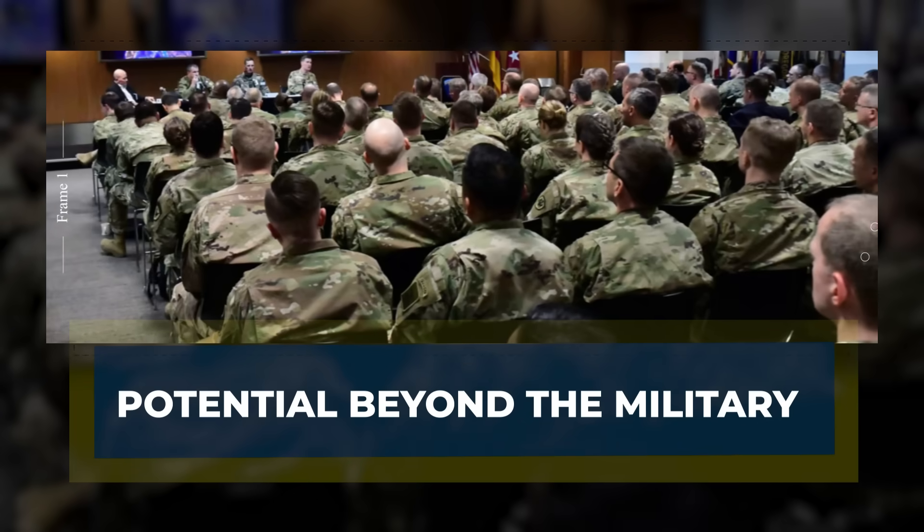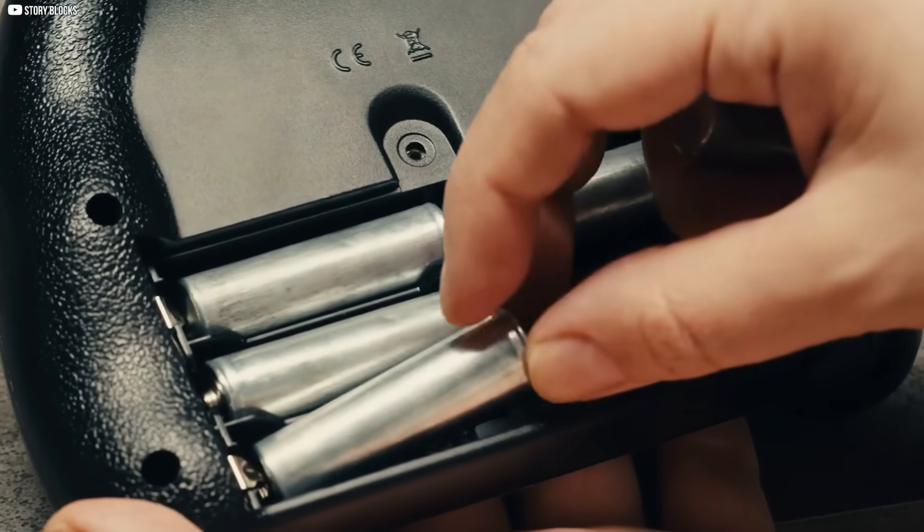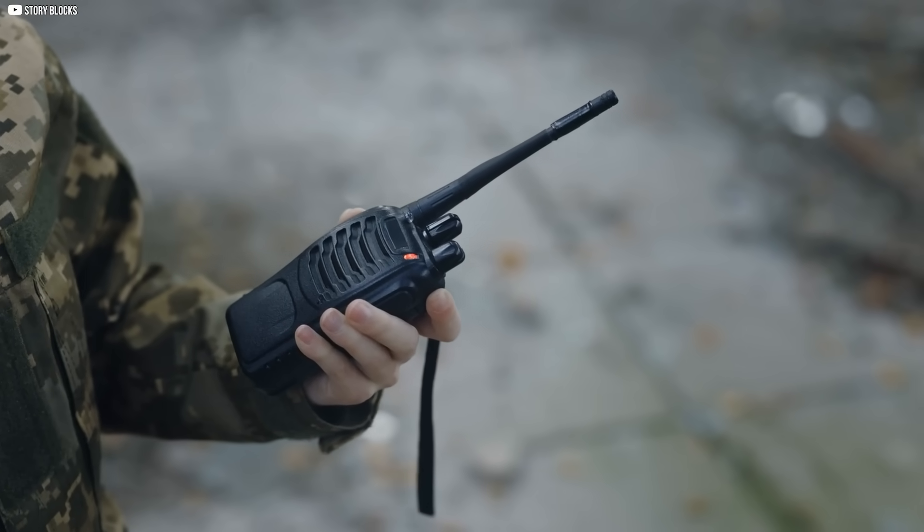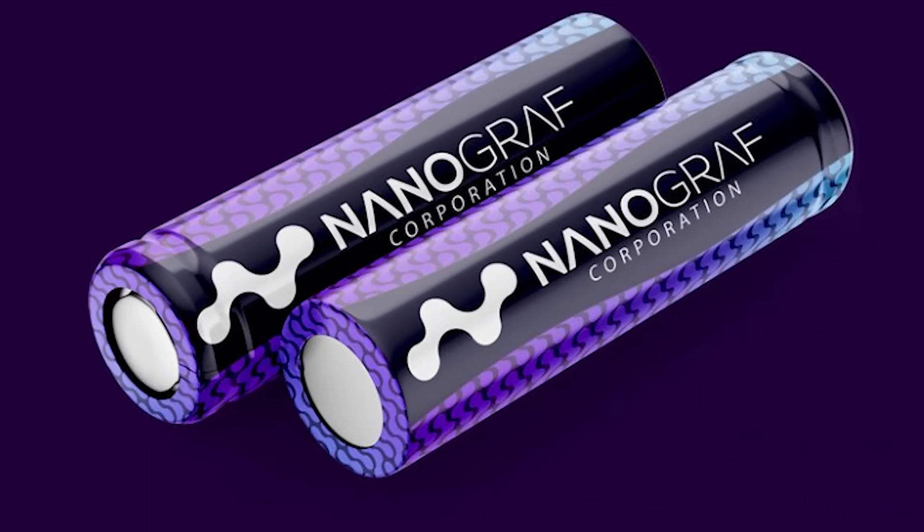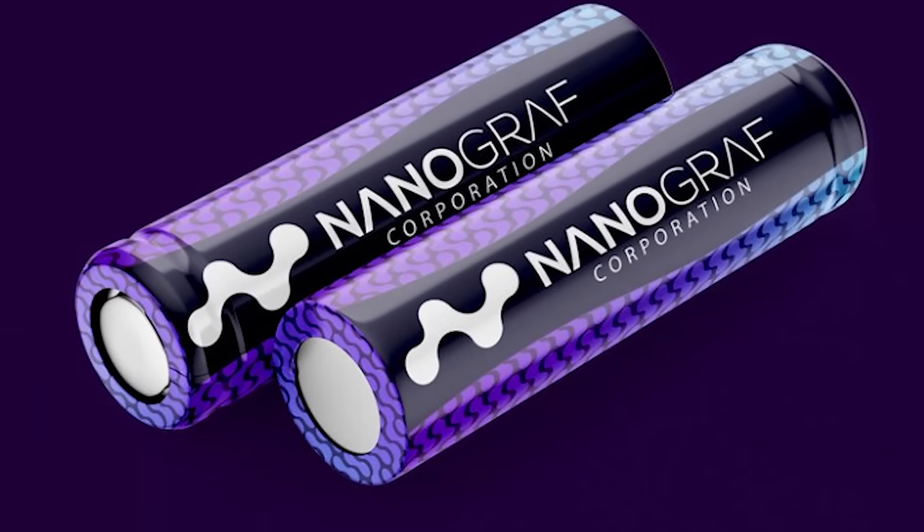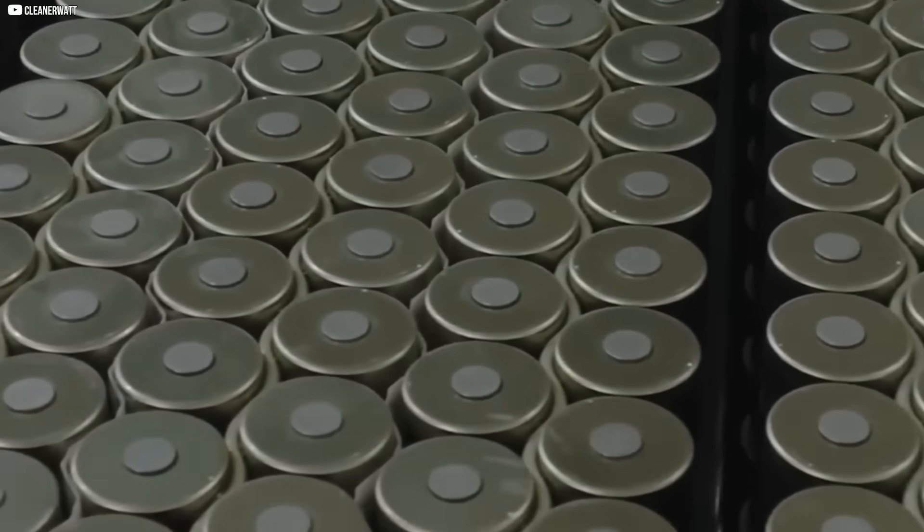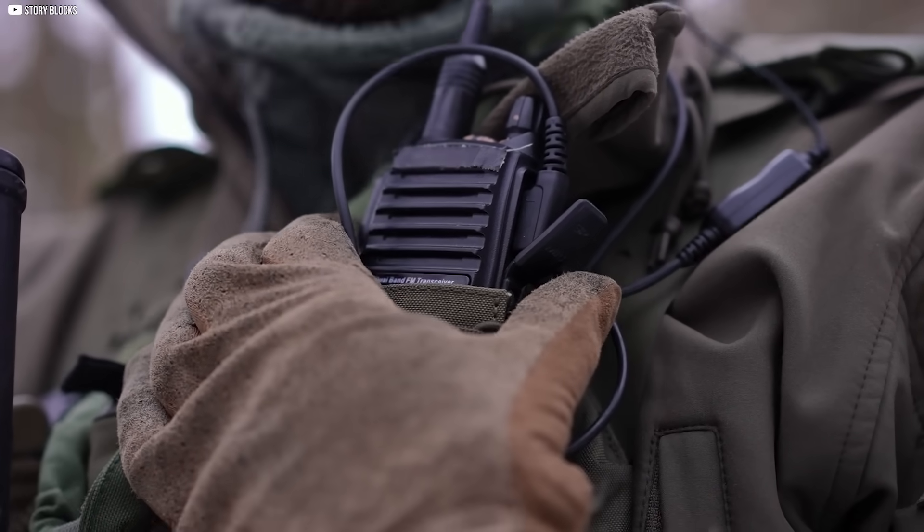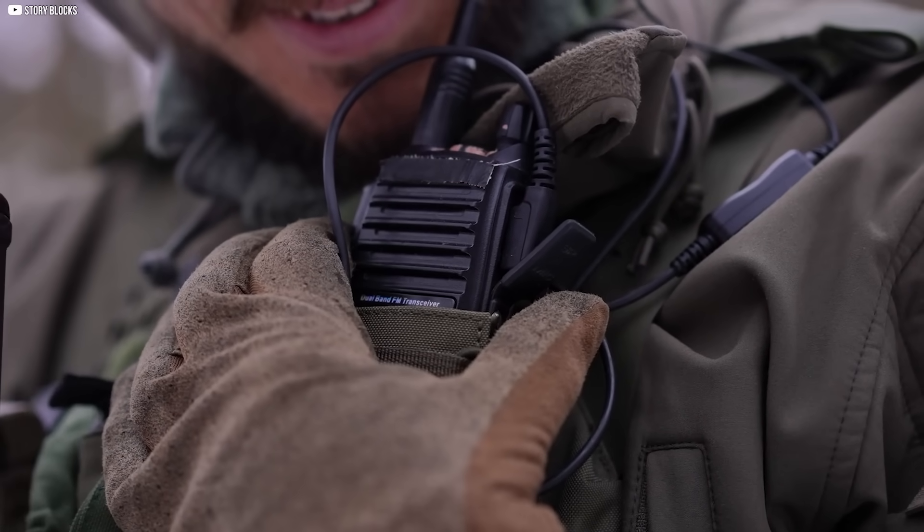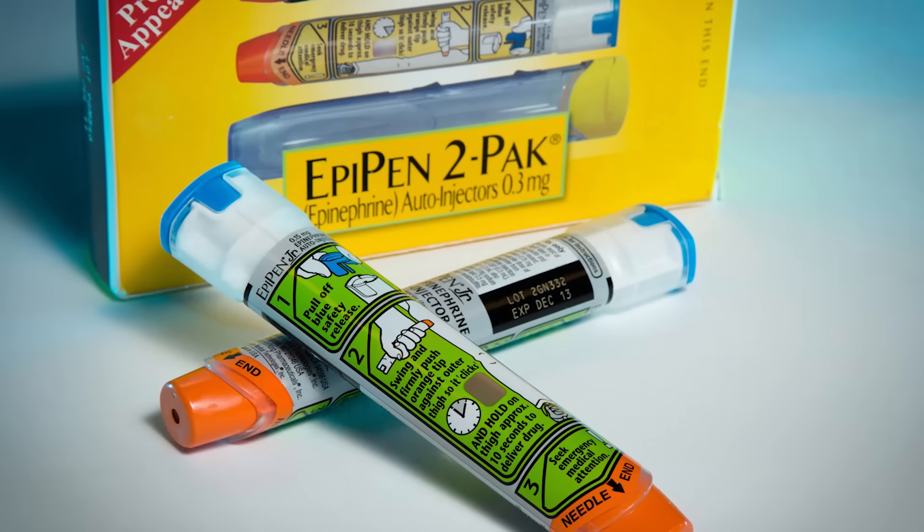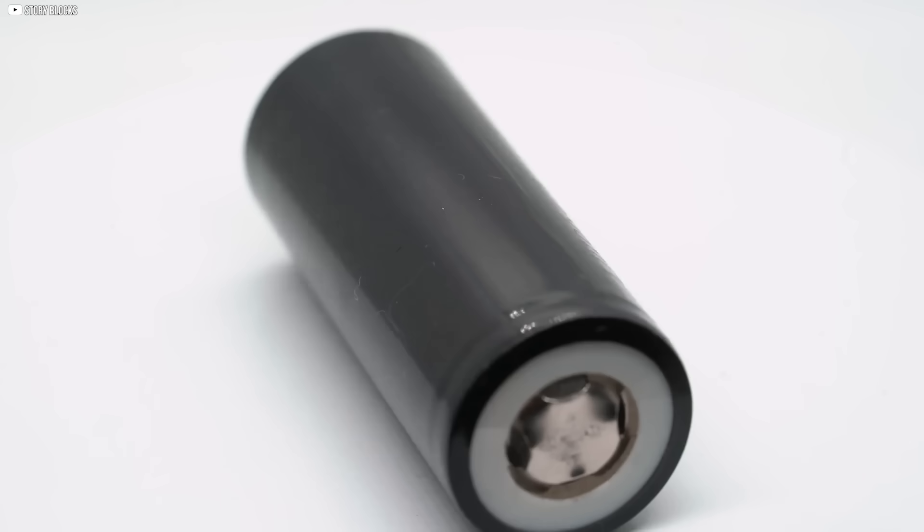Right now, these batteries are going into radios, tools carried in the dark, devices that whisper across silence. But they won't stay there. If Nanograph's design proves itself in the field, under pressure, under fire, then it's only a matter of time. Civilian tech always follows the path carved by defense. That's how we got GPS, EpiPens, even canned food.